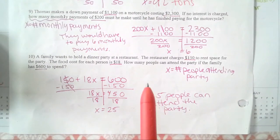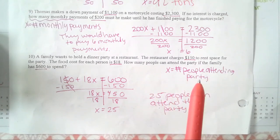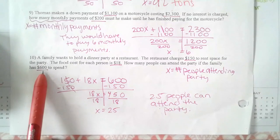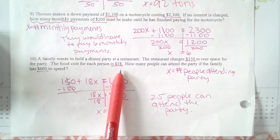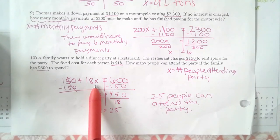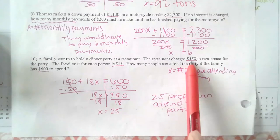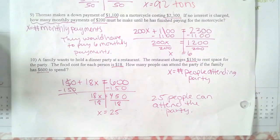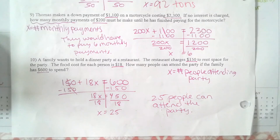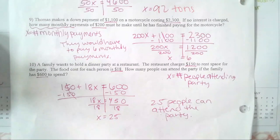And the last one, number 10: you wanted to figure out the number of people attending the party. The family has $600 to spend — that was your total. The cost of food per person was 18X, and there was an additional $150 fee. After setting up your equation and solving, you should have gotten 25 people can attend the party. Hopefully you guys did okay. If you have any questions, please let me or your teacher know. That is it on solving two-step equations with word problems.